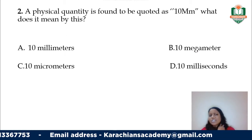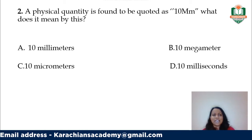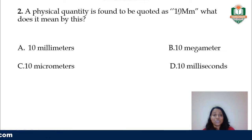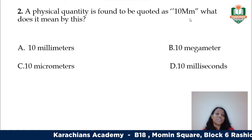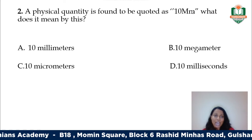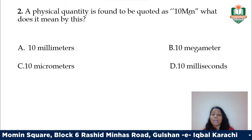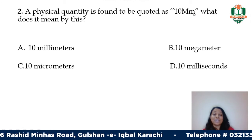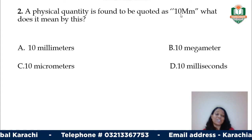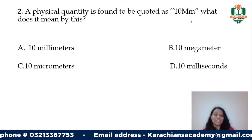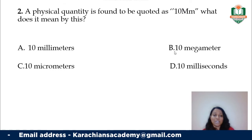The next question says a physical quantity is quoted as 10 capital M small m — what does it mean? We need to say what capital M and small m stand for. 10 is your value, small m is your unit — meters. Capital M is your prefix, which stands for mega. So it's 10 megameters. Option B is your answer.